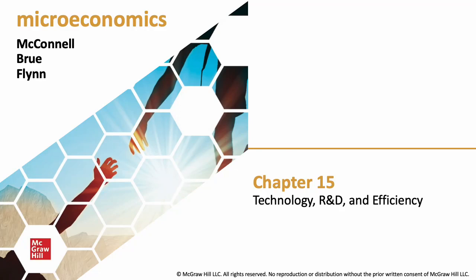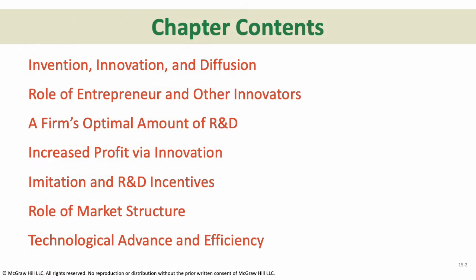Hello everybody. Now we're going to talk about how technology, research and development, and efficiency interact in an economic sense. We're going to look at invention, innovation, and diffusion. Technological innovation is something that we see all of the time. We'll cover the role of entrepreneurs and other innovators, a firm's optimal amount of R&D, how firms can increase profits with innovation, imitation and R&D incentives, and the role of market structure in technological advance and efficiency.